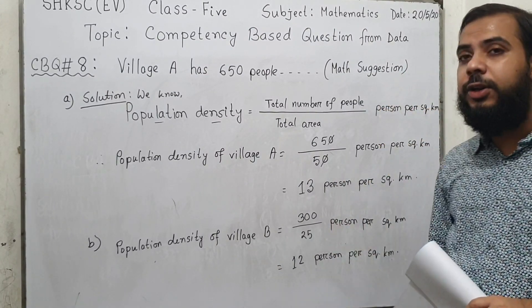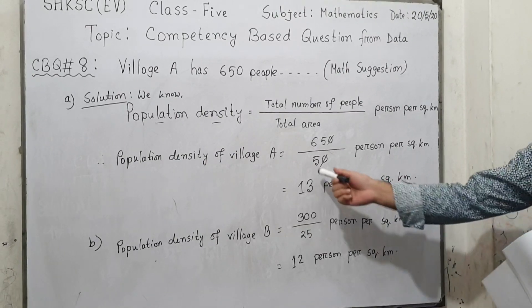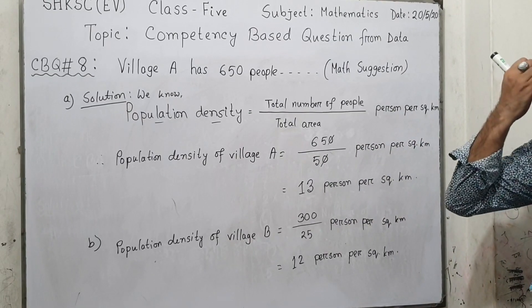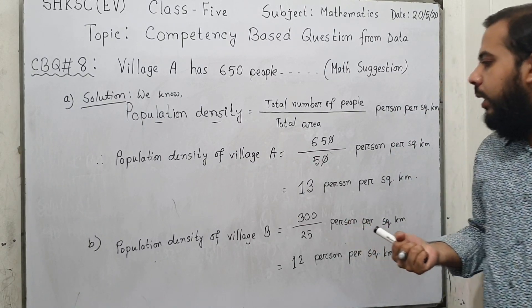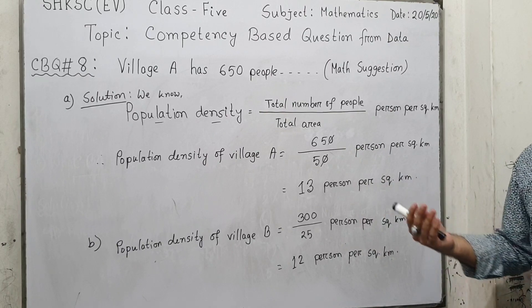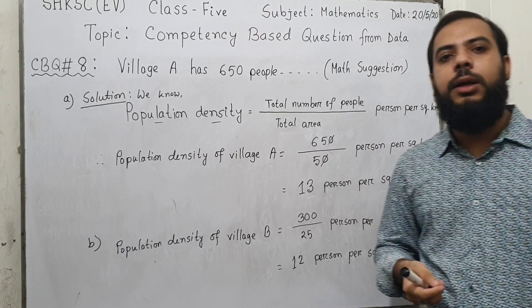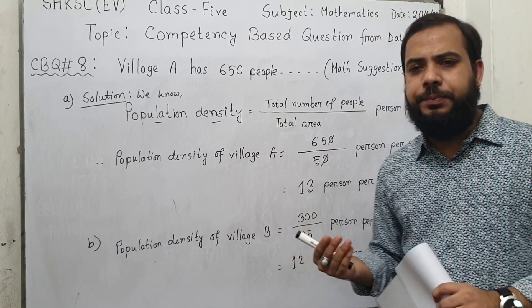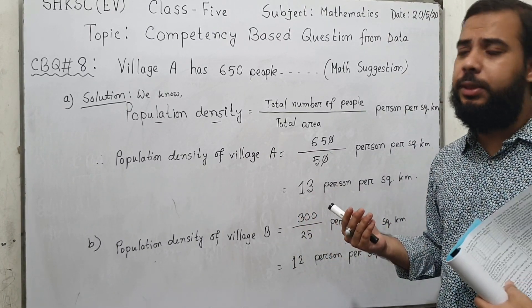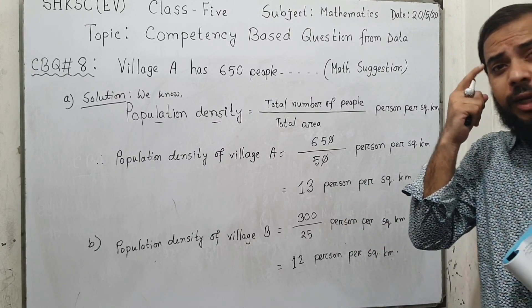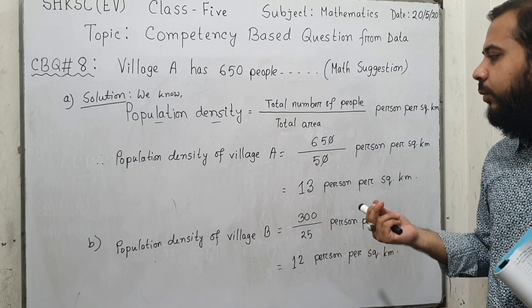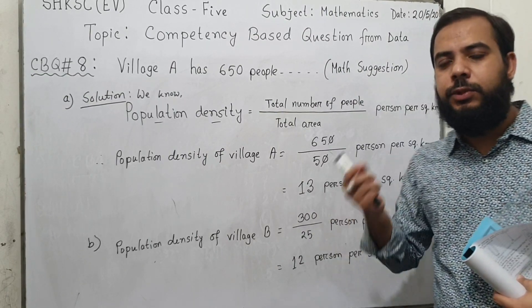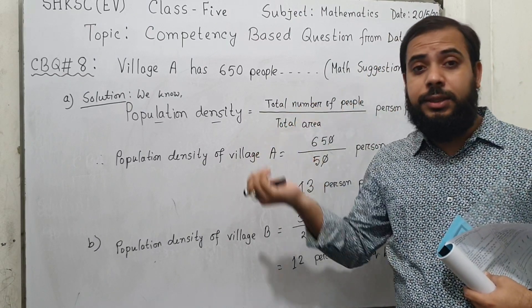More densely or less densely means: if the area is large but the population is small, the density is less. When the number of people is more but the area is less, it is a densely populated area. For example, our country Bangladesh is a densely populated area because it is very small relative to its population — there are 18 crore people in a total area of only 1,47,000 square kilometers.